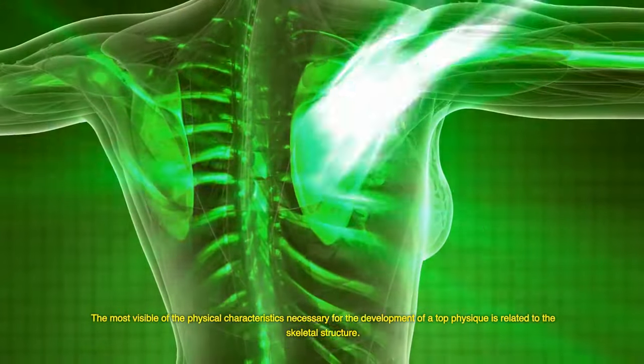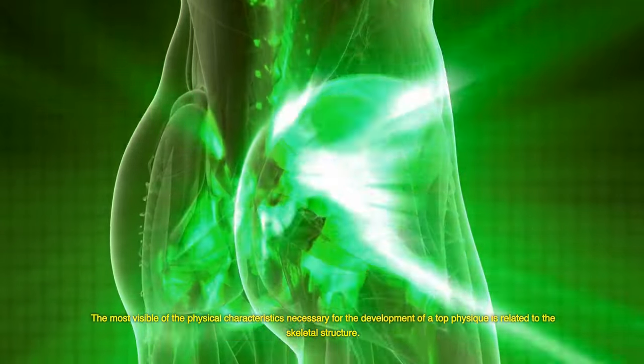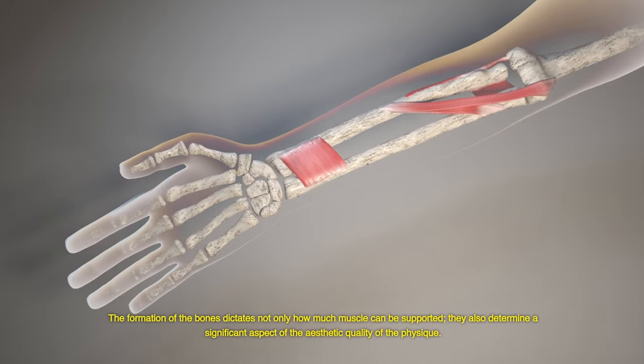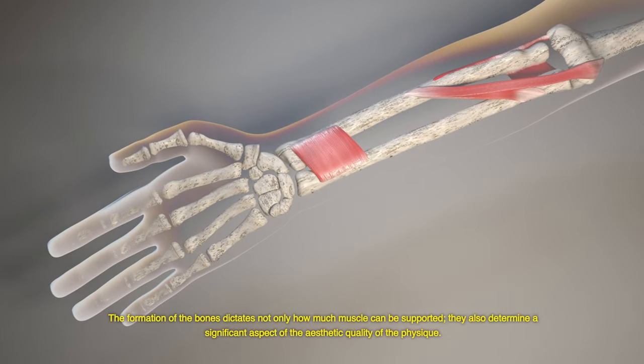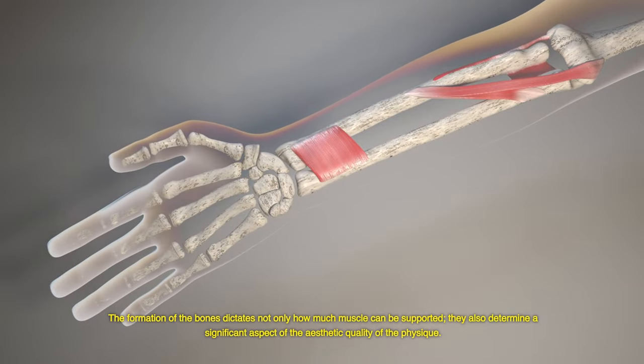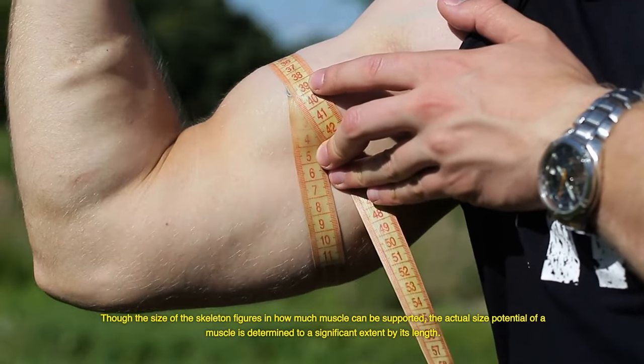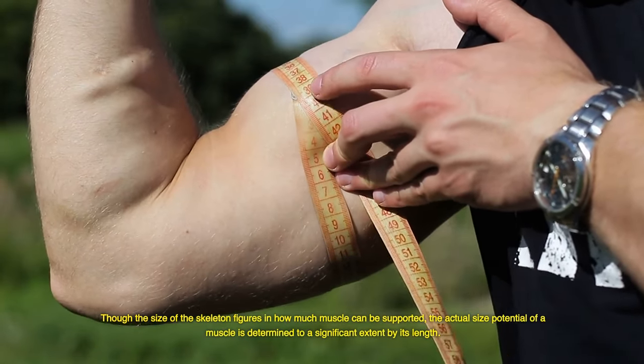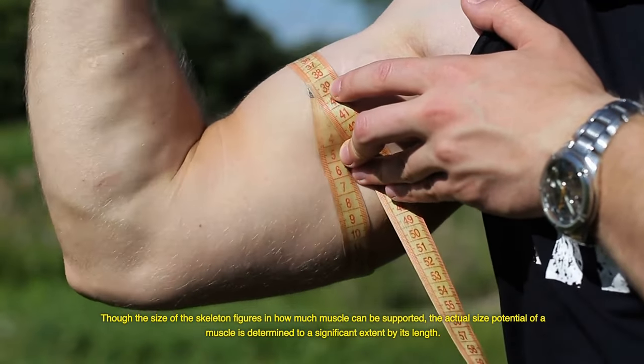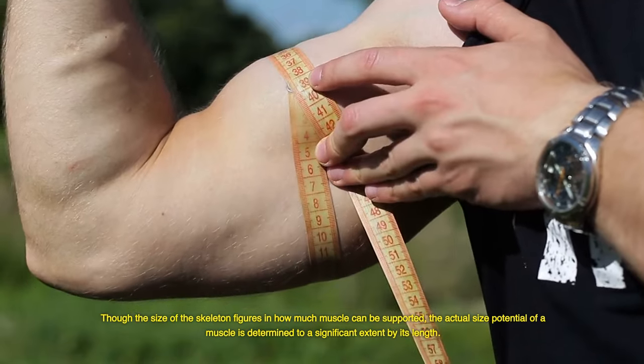The most visible of the physical characteristics necessary for the development of a top physique is related to the skeletal structure. The formation of the bones dictates not only how much muscle can be supported, they also determine a significant aspect of the aesthetic quality of the physique. Though the size of the skeleton figures in how much muscle can be supported, the actual size potential of a muscle is determined to a significant extent by its length.